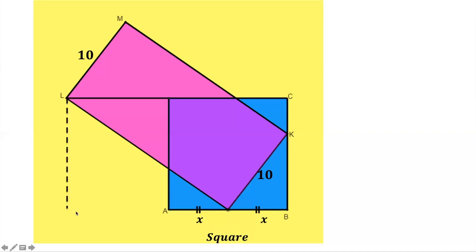From here we draw a line and then draw a line perpendicular to it. Now we notice this angle is already 90 degrees, so we have two similar triangles — in fact three: the small one, the middle one, and the bigger one. This side is 2X, and since it's a square, this other side is also 2X.